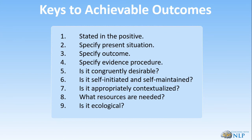The keys to achievable outcome is almost like the NLP equivalent of a coaching model. The client comes to you with an outcome they want, but it's probably not a SMART goal yet. The keys to achievable outcome helps them become much clearer, and then they can rewrite it as a SMART goal and apply the five principles of success — taking massive action, using sensory acuity, having behavioral flexibility, and operating from a physiology and psychology of excellence.